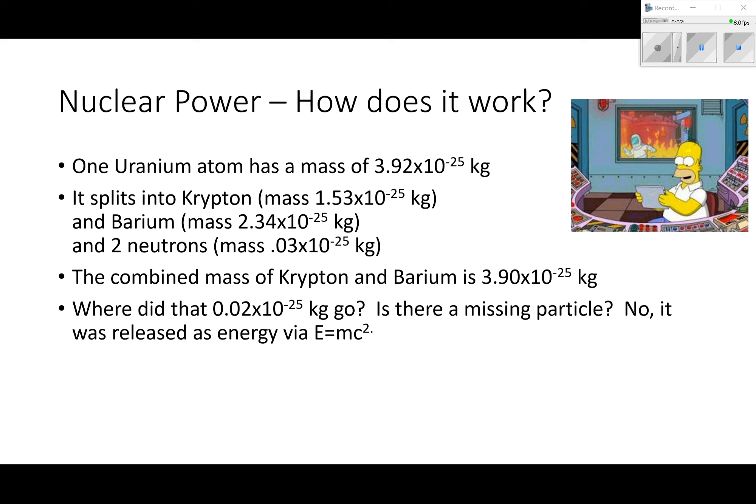The combined mass of the krypton and the barium and the two neutrons is 3.90 times 10 to the minus 25. So I started with 3.92 and I end with 3.90. So where did that 0.02 times 10 to the negative 25 kilogram go? Is there like a missing particle somewhere? There's not.